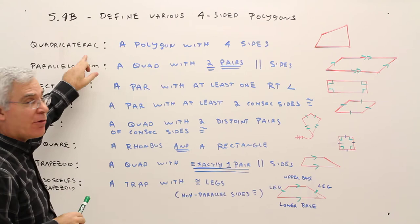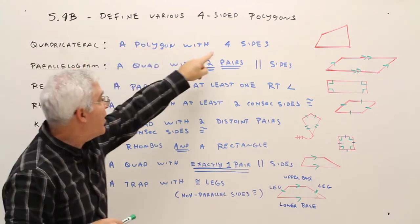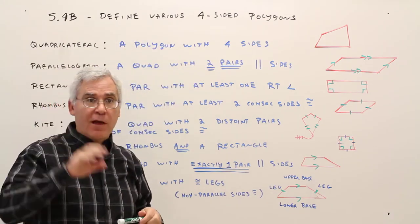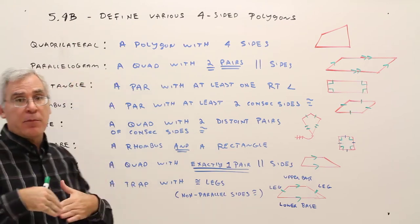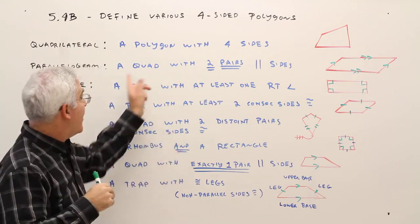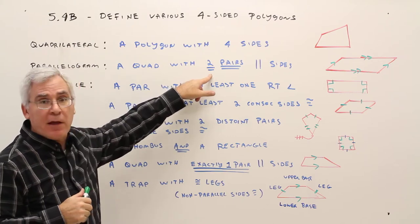For example, a quadrilateral is a polygon with these special properties: four sides. A parallelogram is a quadrilateral with these extra properties: two pairs of parallel sides.